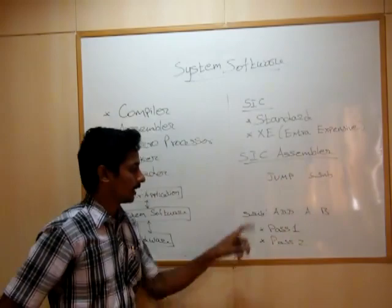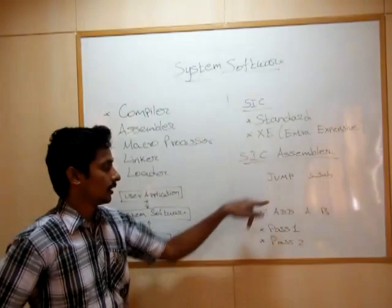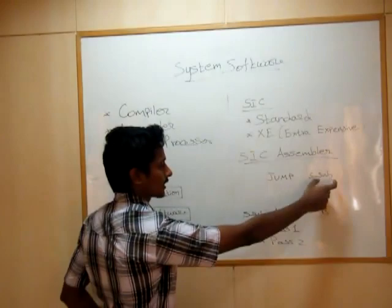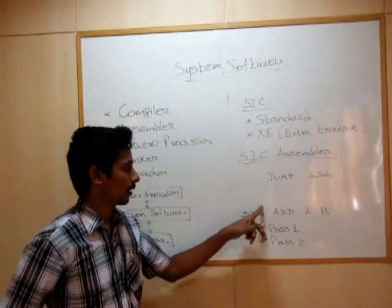When we provide this example code into the SIC Assembler, it will be converted into object code for the SIC, so the SIC can execute the user code. Here, Jump S_SUB is a subroutine described here. During a conversion, there will be a problem.